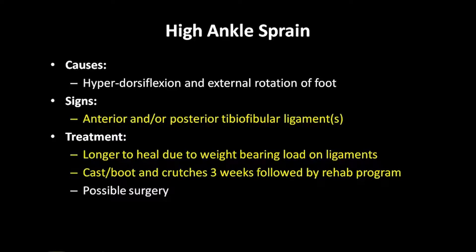The high ankle sprain involves the anterior and posterior tibiofibular ligaments and usually occurs in conjunction with a lower ankle sprain. These ligaments take longer to heal due to weight bearing on the tibia and fibula. A hard cast or boot and crutches are used for three weeks, followed by a rehabilitation program.